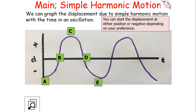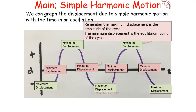Assuming the displacement in this cycle started as negative, it then goes to zero at equilibrium, then to maximum positive displacement at C, back to zero at D, and back to maximum negative displacement at E. Remember that a maximum displacement can be either a maximum positive or a maximum negative — it simply indicates the direction from the equilibrium point.